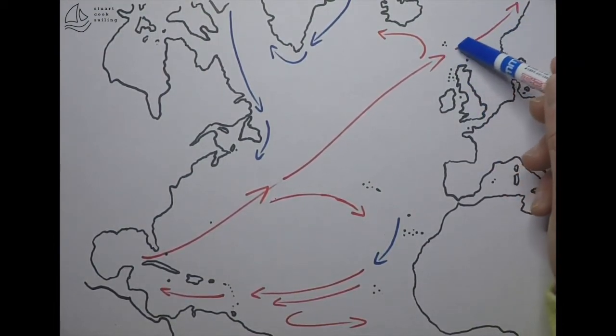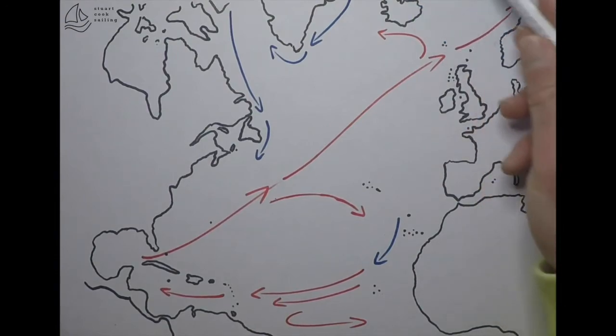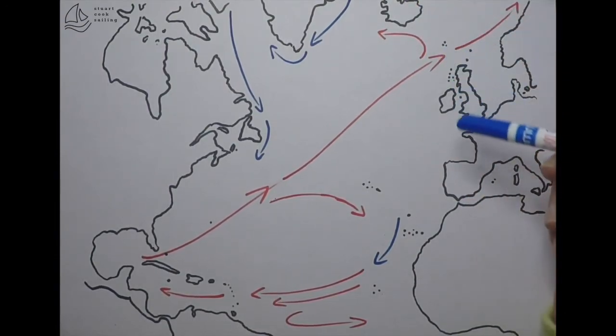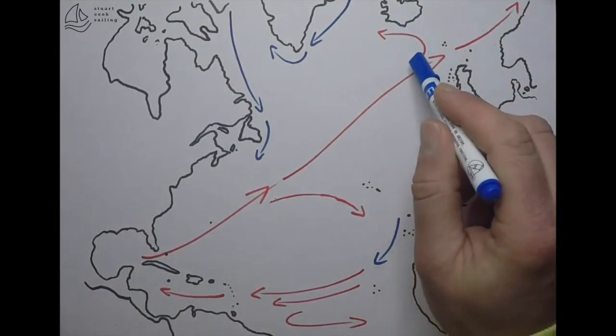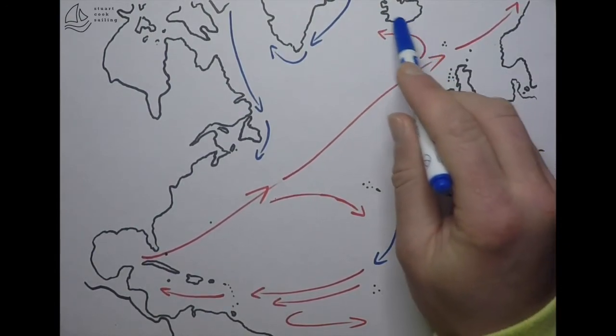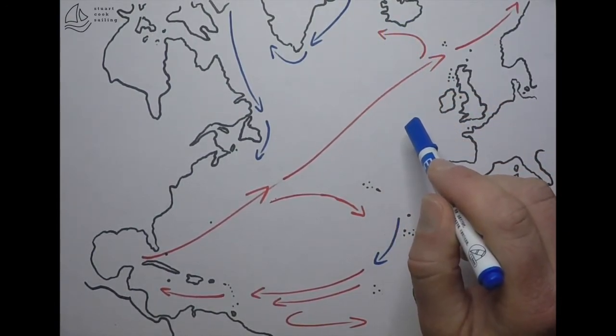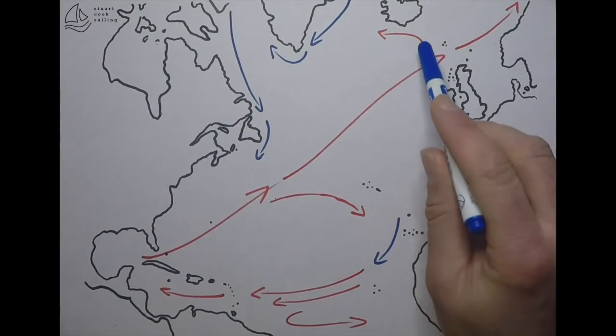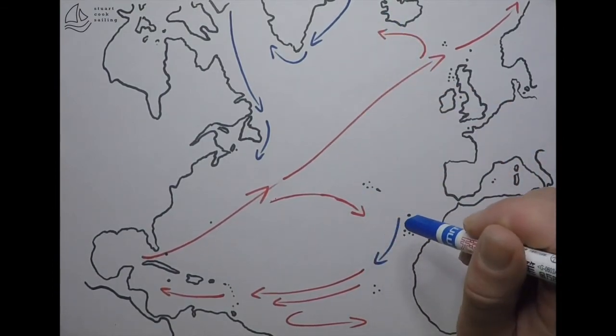The Norwegian current keeps that going up, keeping the Norwegian Sea relatively ice-free. And the Irminger current tips around the southern coast of Iceland, keeping that a little bit warmer as well.